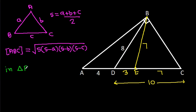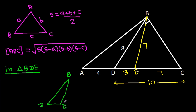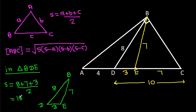So in triangle BDE, we have BD is 8, BE is 7, and DE is 3. So S will be equal to (8 plus 7 plus 3) by 2, which is 18 by 2, that is 9.